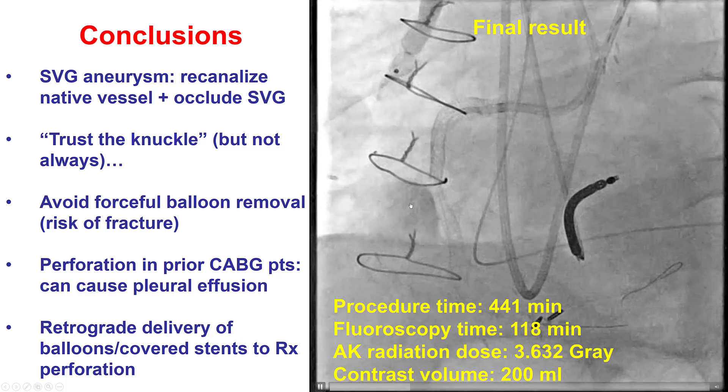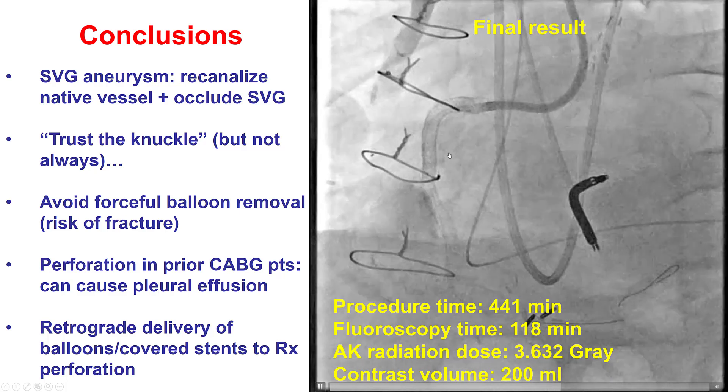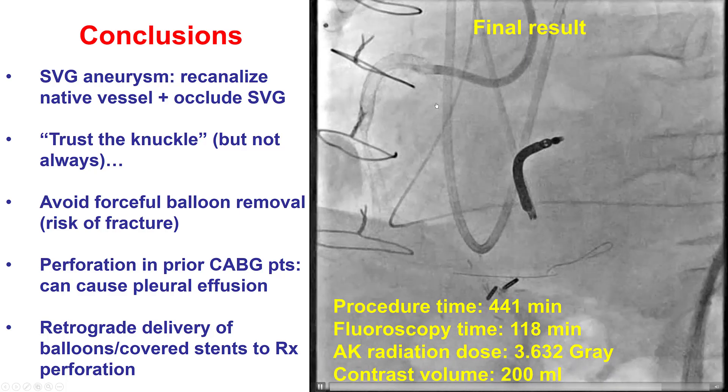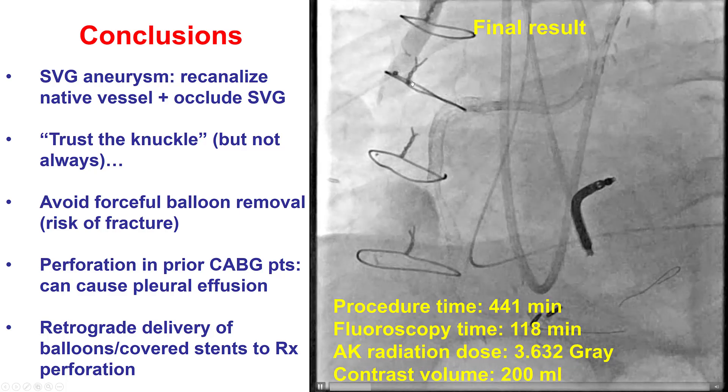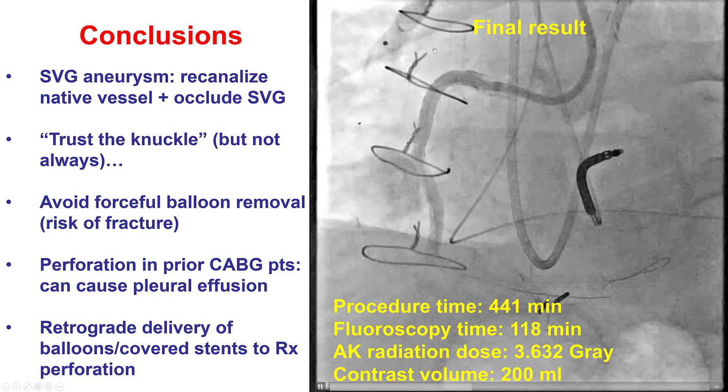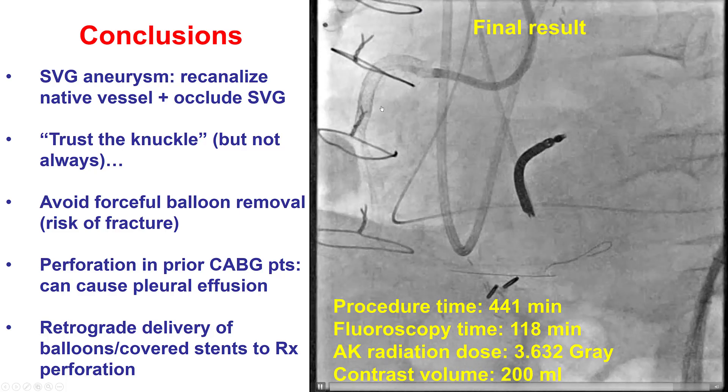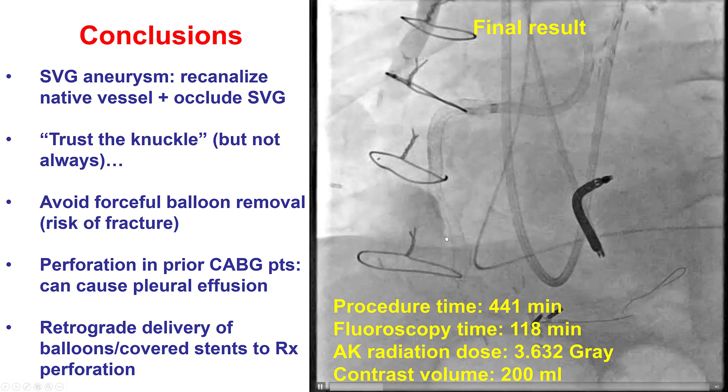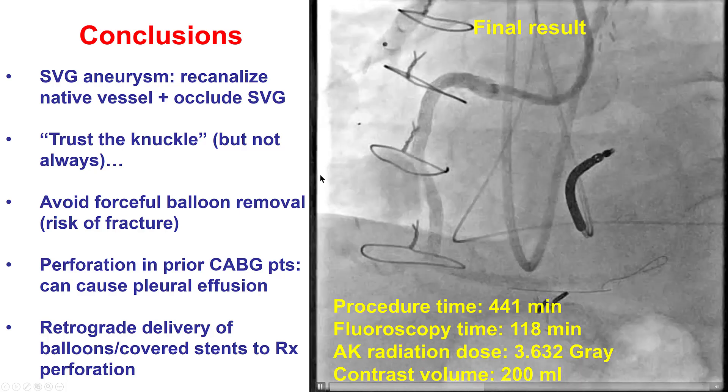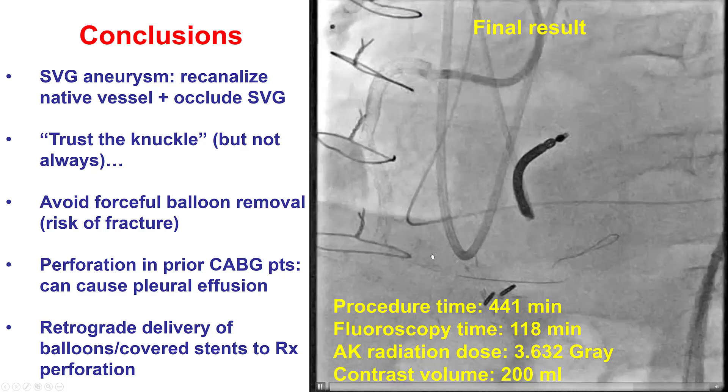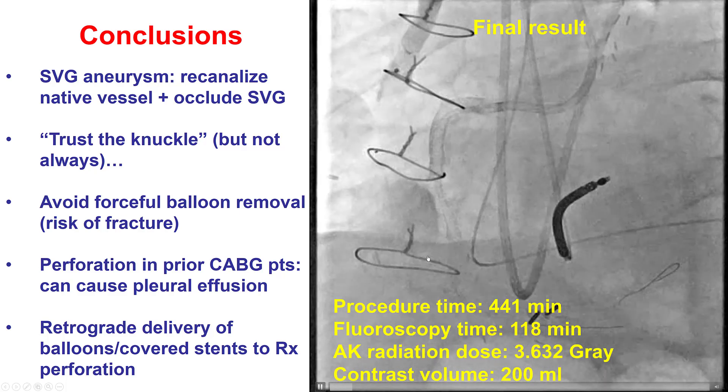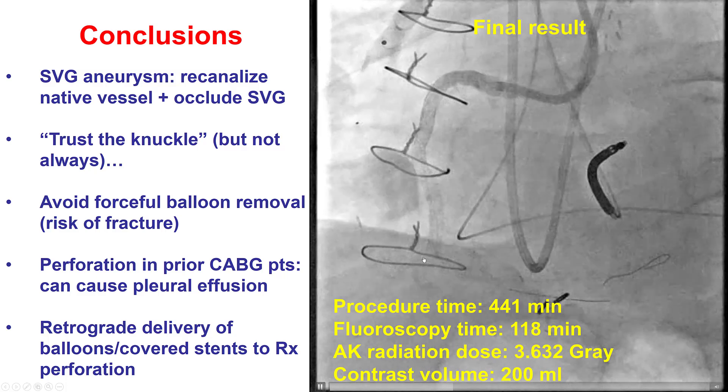And the fifth lesson has to do with the management of coronary perforation. In this case, we had the challenge of a balloon fracture in the proximal part of the vessel that did not allow antegrade delivery of equipment. But being retrograde through a saphenous vein graft, we were able to deliver retrograde balloons for occlusion, as well as a covered stent for sealing the perforation site. Thank you.